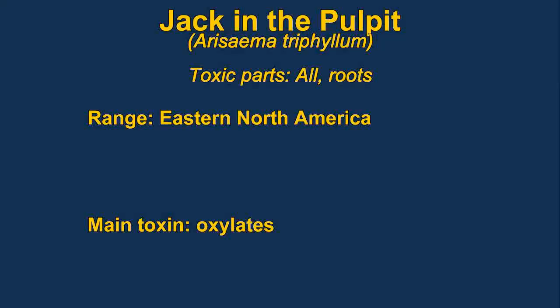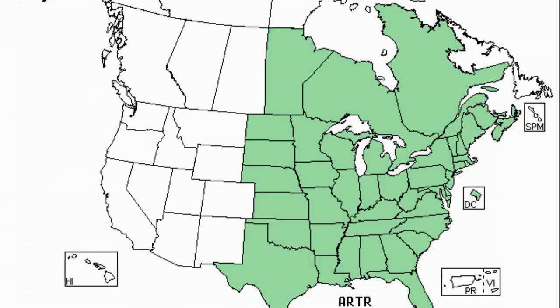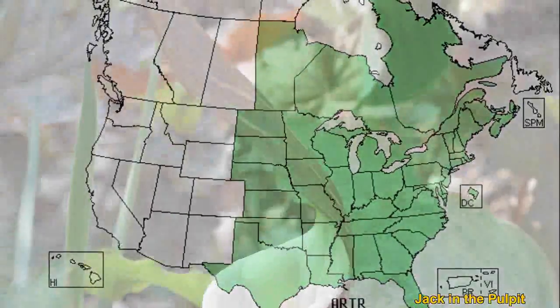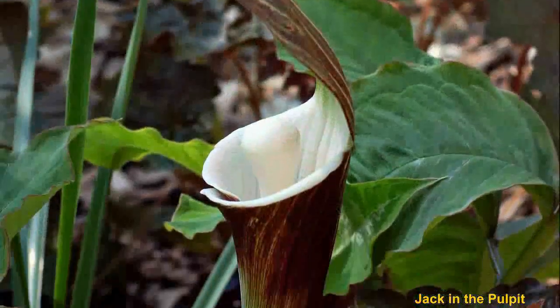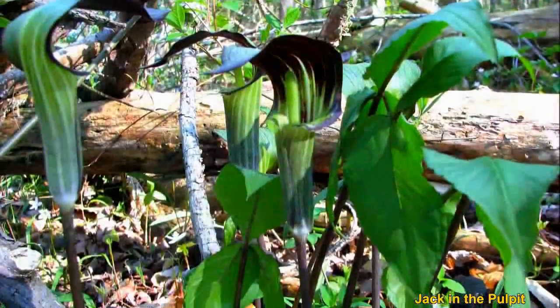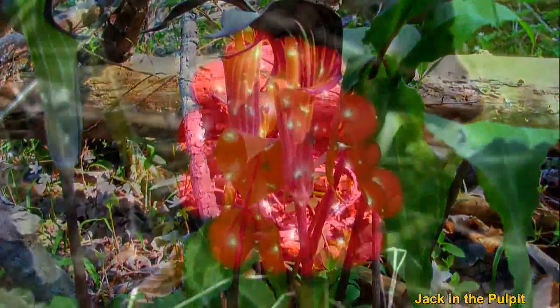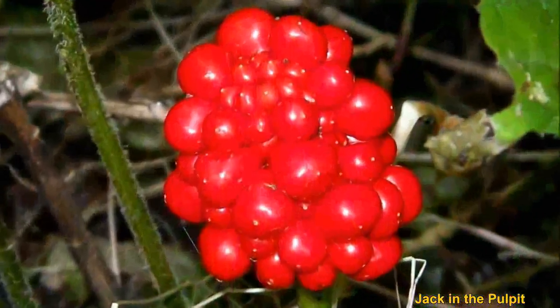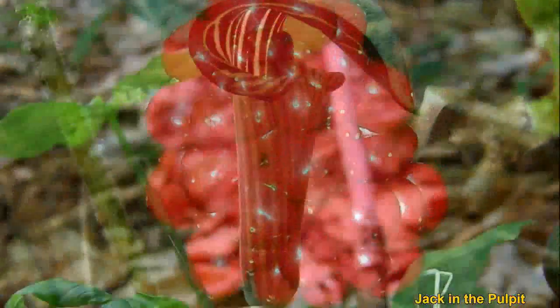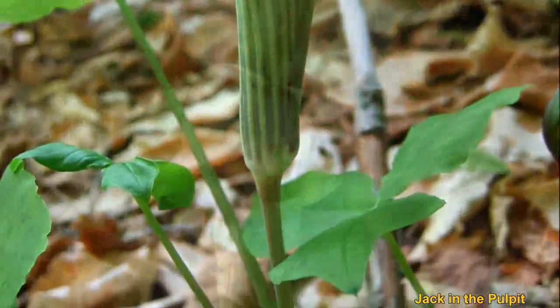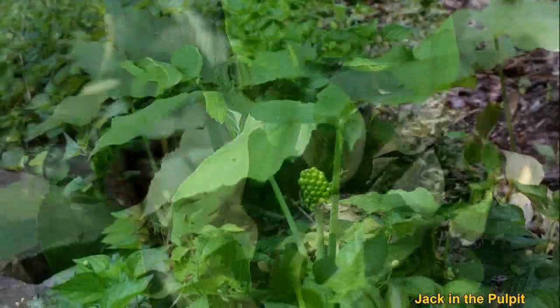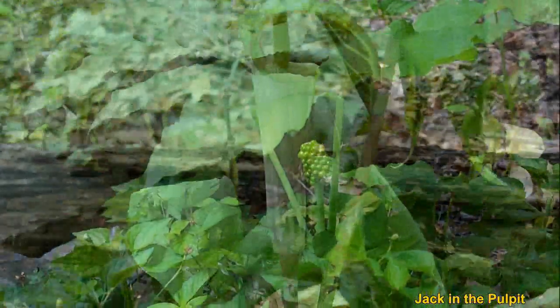Jack in the pulpit is a herbaceous plant with small inconspicuous flowers and bright red berries. The main toxin is calcium oxalate crystals, which cause very irritating symptoms when eaten. Another toxin is asparagine. The plants look quite a bit like poison ivy.